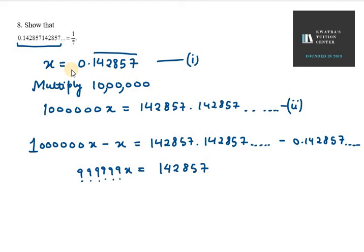So we have 999999x equals 142857. Therefore x equals 142857 divided by 999999, which simplifies to 1/7.